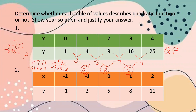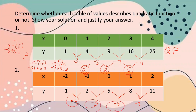Table two has y-values: -1, 2, 5, 8, and 11. The first differences are: -1 minus 2 = -3; 2 minus 5 = -3; 5 minus 8 = -3; 8 minus 11 = -3. Since the first differences are all equal to -3, this is not a quadratic function — it is a linear function.